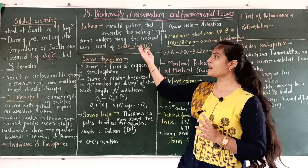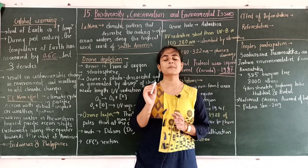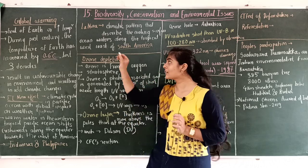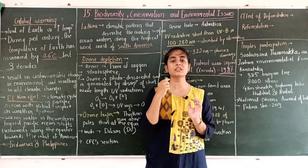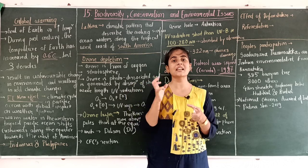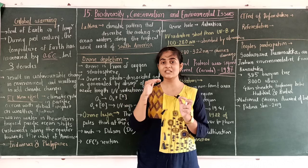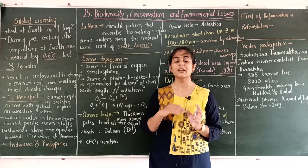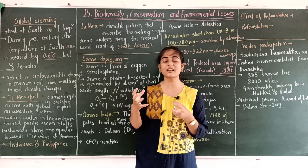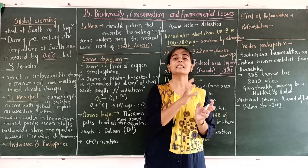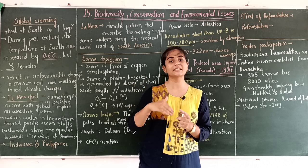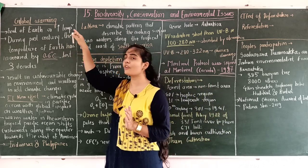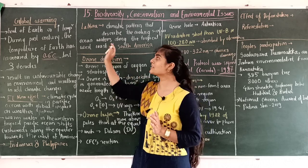First is global warming. We saw in the last lecture that the greenhouse effect means excess of greenhouse effect causes excess heating of the earth, and this condition is known as global warming. When greenhouse gases increase in concentration in the environment, the earth's surface temperature increases due to the interaction of greenhouse gases. When that temperature increases beyond the limit, such a condition — that causes heating of earth or increase in temperature of earth — is known as global warming.